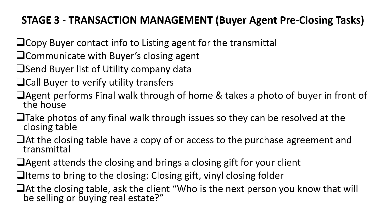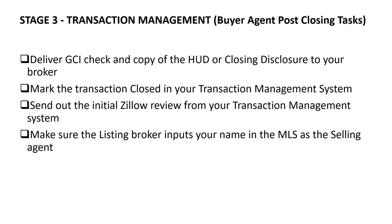Bring a closing gift and a vinyl closing folder for your client to the closing. At the closing table, ask your client who is the next person they know that will be buying or selling real estate — your buyer has been talking about this purchase for weeks or months, so they'll likely know someone. For buyer agent post-closing tasks: bring your GCI check and a copy of the closing documents to your broker. Mark the transaction closed in your system and upload a copy of the HUD or closing disclosure. Send out a Zillow review request — in Dotloop you can trigger this with one click when you mark the loop closed. Make sure the listing broker inputs your name in the MLS as the selling agent with the correct price.